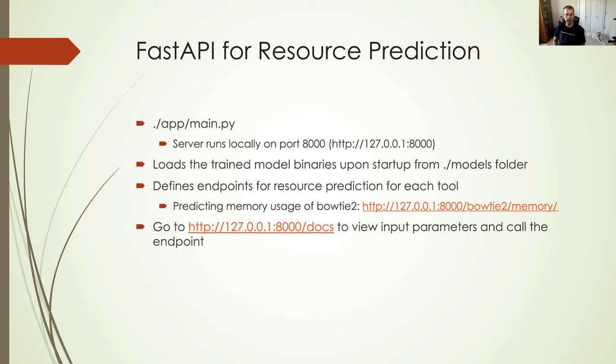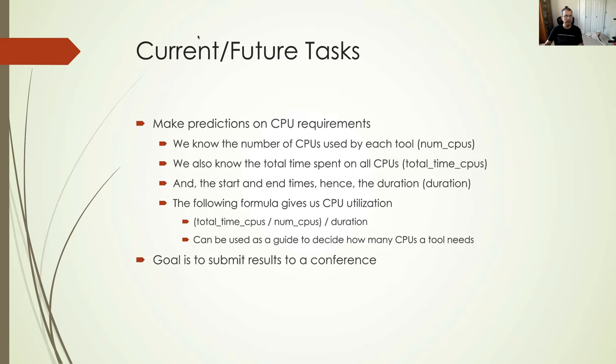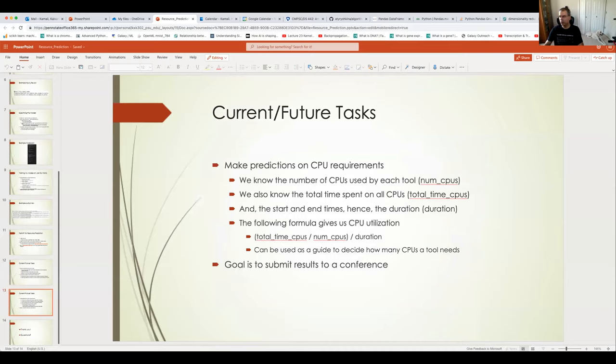So when we do this, we're going to end up with some model binaries based on the hyperparameters that we specify, the input data, and the models that we specify. The next step is to use those models. There's a fast API service in the app folder called main.py. It's very simple right now. It just has one endpoint for illustrative purposes. It runs on localhost port 8000. Upon startup, it loads all the model binaries from the models folder and defines endpoints for resource prediction for each tool. For example, for Bowtie2 memory prediction, there's an endpoint called Bowtie2_memory. Let me actually show you that. I'll share my full screen.